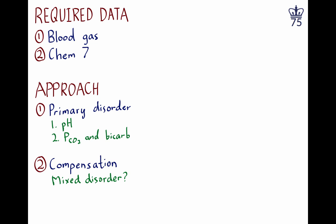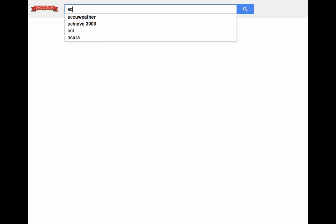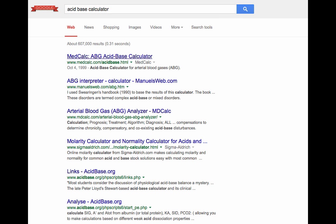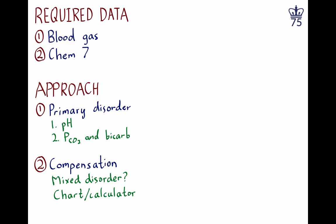What is the degree of compensation? This has been done experimentally, so there's a range of compensation that accompanies every disorder. This can be looked up in any acid-base chart, or you can use one of the online calculators to see if this is a pure disorder or a mixed disorder. The anion gap has to be looked at individually, because you may have a wide anion gap with nothing else going on in the bicarbonate because of a complete balance situation.